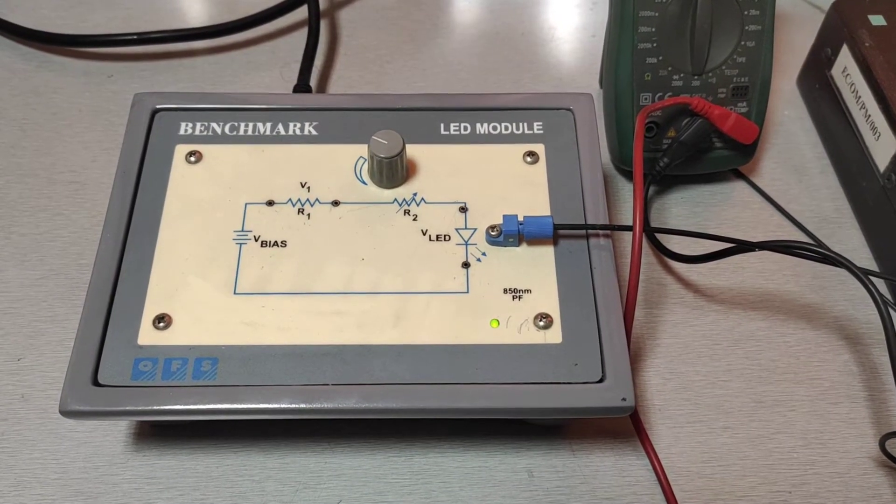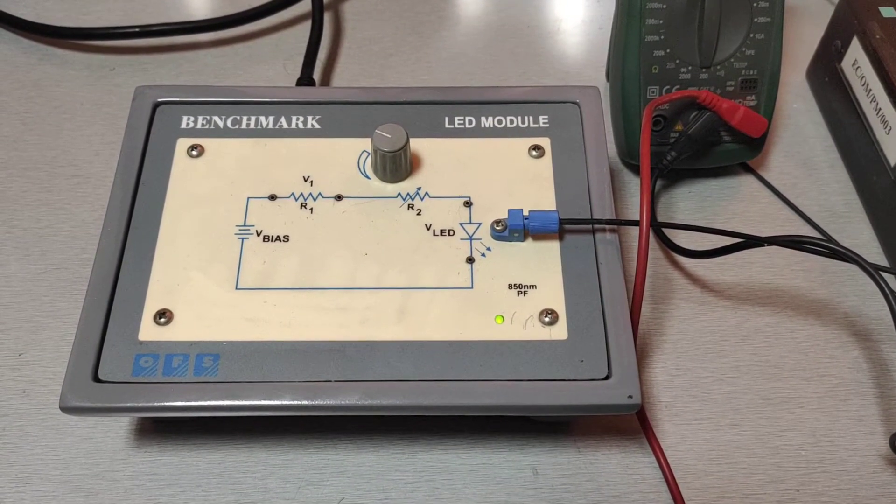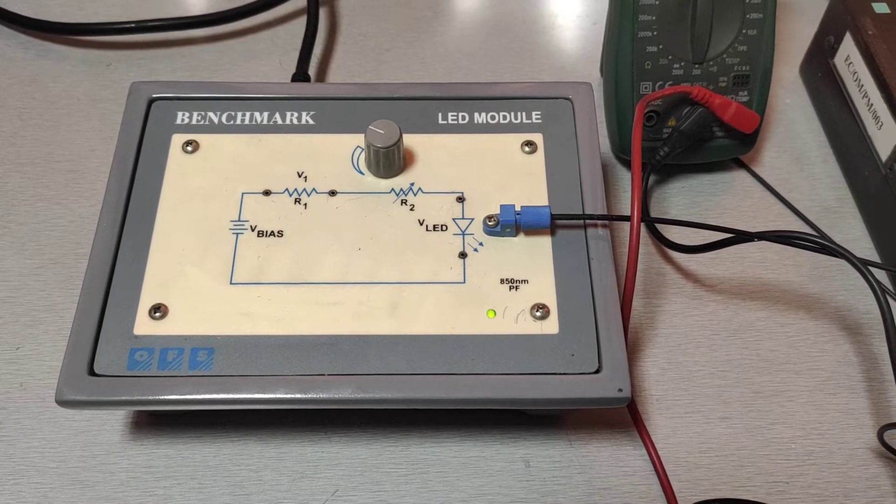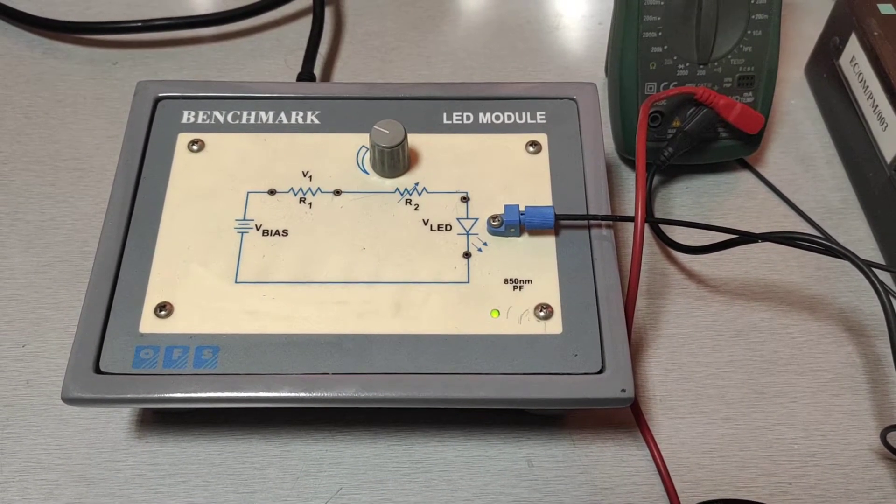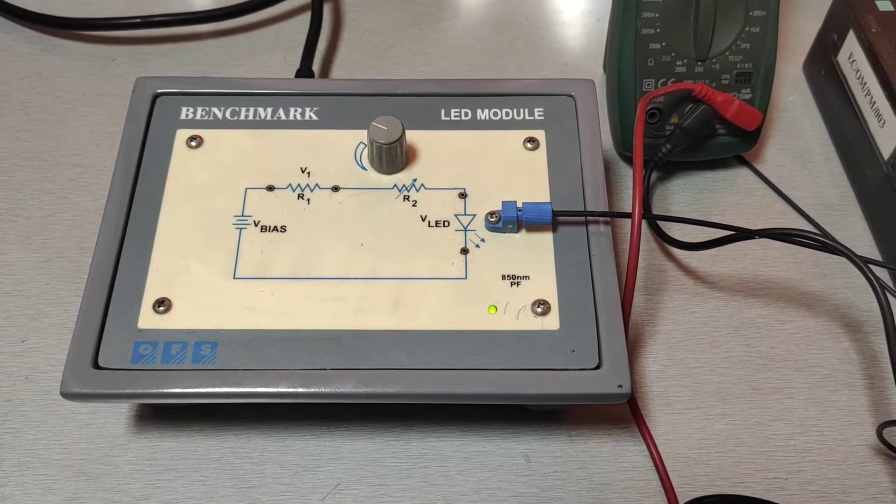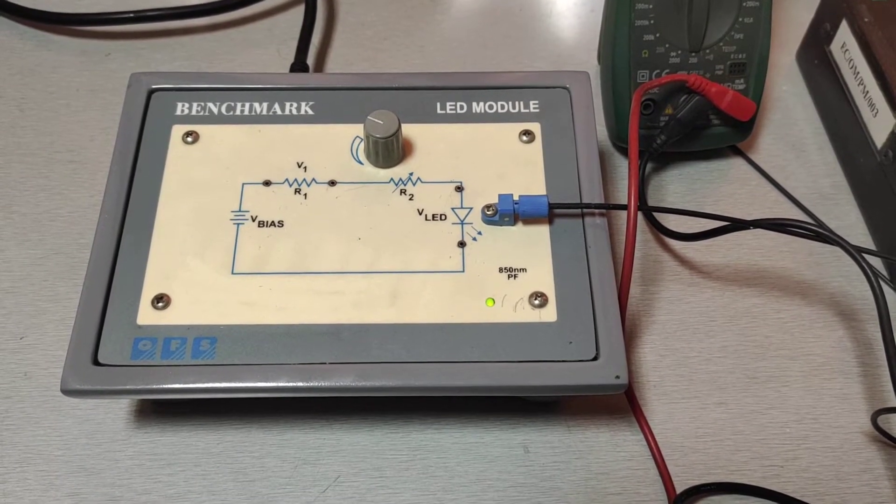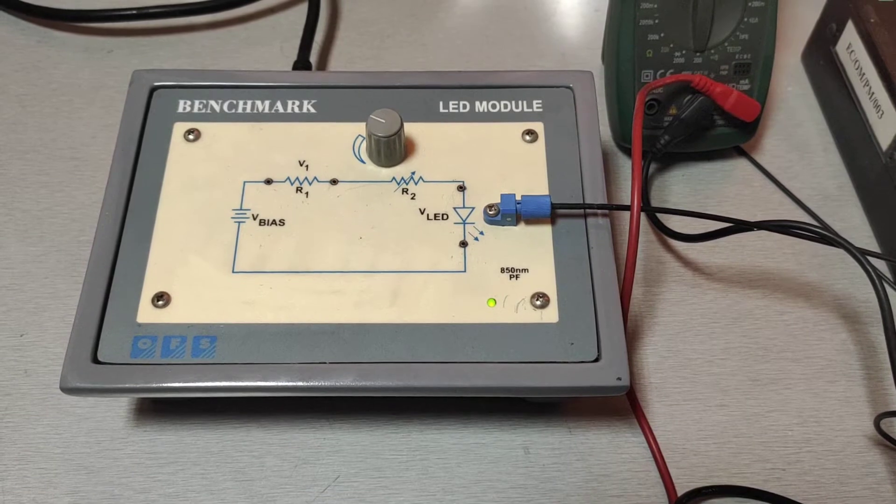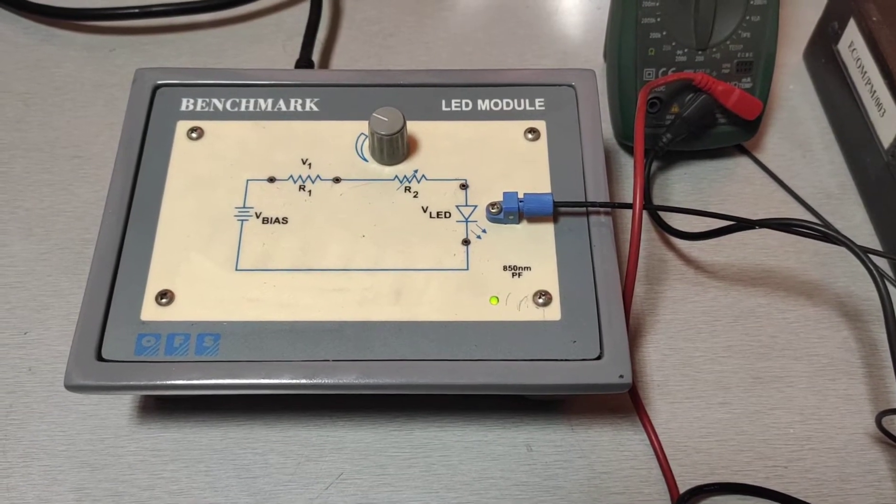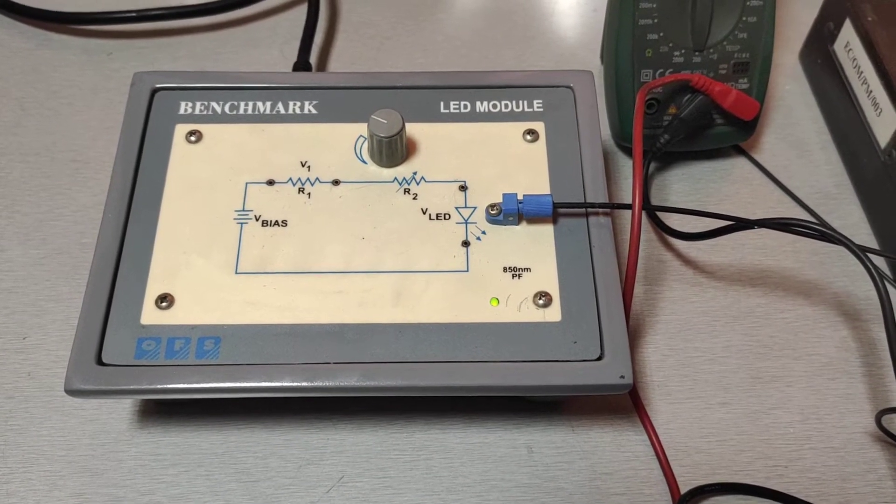Dear learners, welcome to the course Advanced Communication Laboratory. In this video, I will explain the experiment studying DC characteristics of LED. LED is a light emitting diode. It is one of the major sources for optical fiber communication.